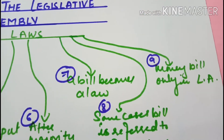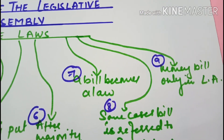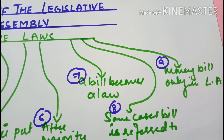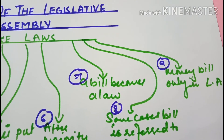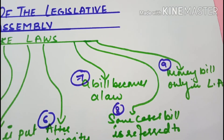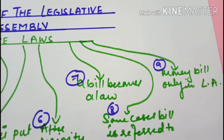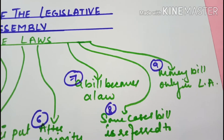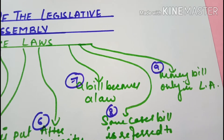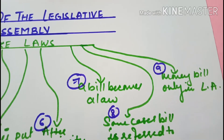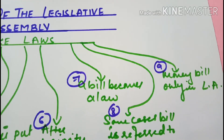Iska next part hai money bill. Jo bills hote hai money se related, woh sirf legislative assembly mein hi discuss kiye jate hai. Aur baaki ke bills hote hai, jo baaki ke laws hote hai other than money bill, woh dono houses mein discuss kiye jate hai.